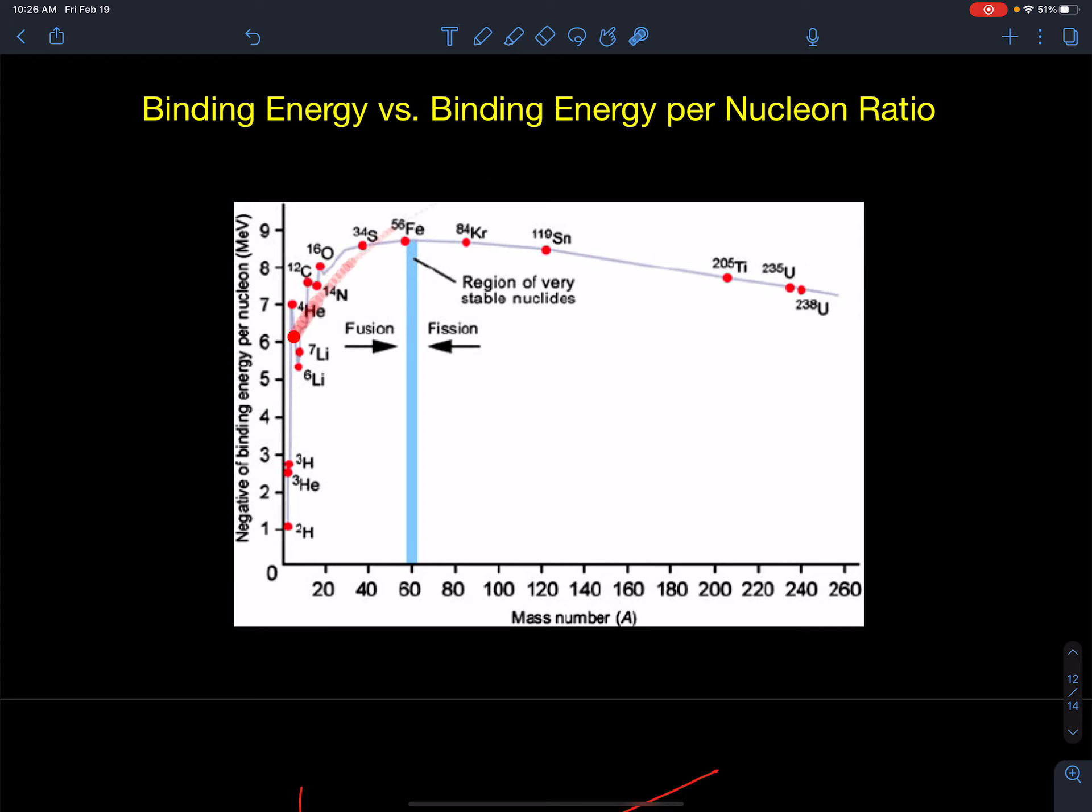So how to understand this table is on the right-hand side of iron, elements break apart, they undergo fission. And on the left-hand side of this table, elements add to each other, and they fuse together in the sun to become more stable. Fission on that side, fusion on that side.